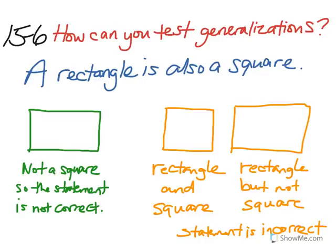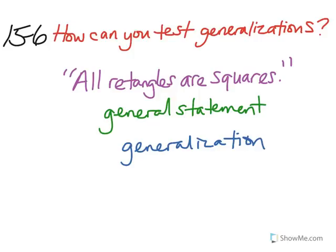However, is the statement correct for all examples? And that answer, of course, would be no, which is why we would say this is an incorrect statement. The statement 'all rectangles are squares' is a general statement because it refers to all rectangles. Another name for a general statement is a generalization. So in this case, this generalization is incorrect.